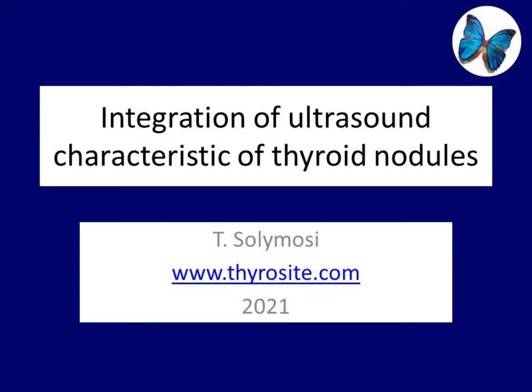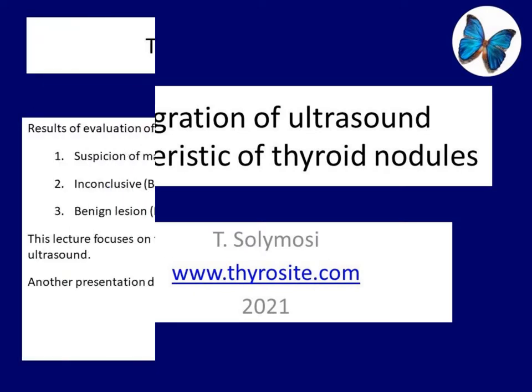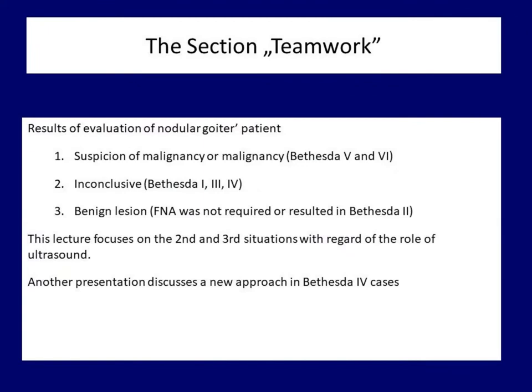Dear colleagues, the topic of integration or teamwork starts at the point when we have to start thinking. After finishing the evaluation of a nodule algorithm patient, there are three possibilities. The first and least frequent is that the patient has a suspicious, Bethesda category five, or definitively malignant nodule. We are generally acknowledging the problem that more and more people are formulating a recommendation that papillary cancers should be treated differently based on the size of the nodule and the age of the patient.